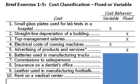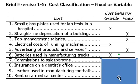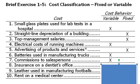Batteries used in manufacturing trucks: the more trucks we make, the more batteries we would use — I would expect that to be a variable cost. Commissions paid to salespersons: the more sales we make, the higher the commissions. That also should be a variable cost.